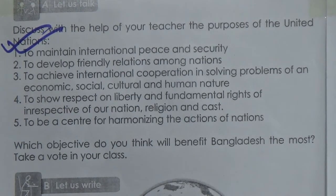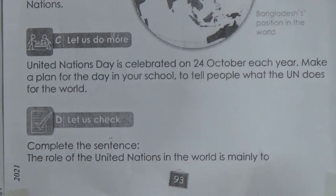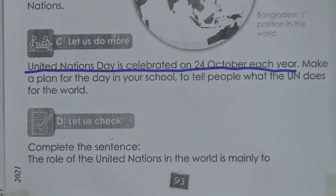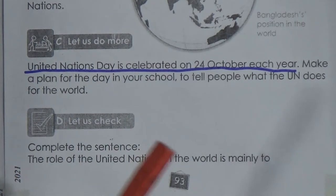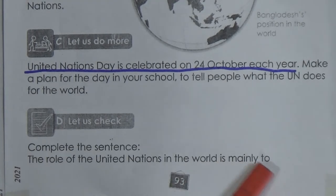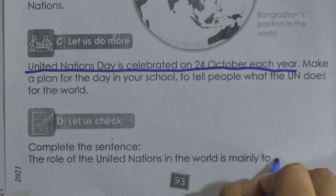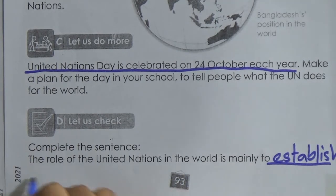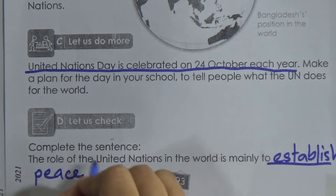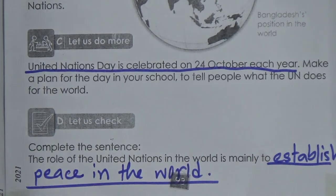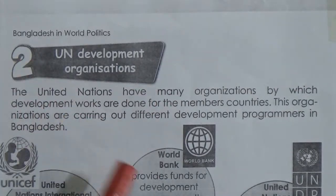United Nations Day is celebrated on 24 October every year. The United Nations was formed on 24 October 1945. In Section D, complete the sentence: 'The role of the United Nations in the world is mainly to establish peace in the world.' Now we will go to the next page — UN Development Organizations.